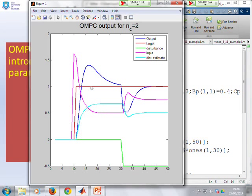If you look at the blue line, which is the actual process output, what you notice is it is indeed converging, so you have got offset free tracking as desired using these observer states.